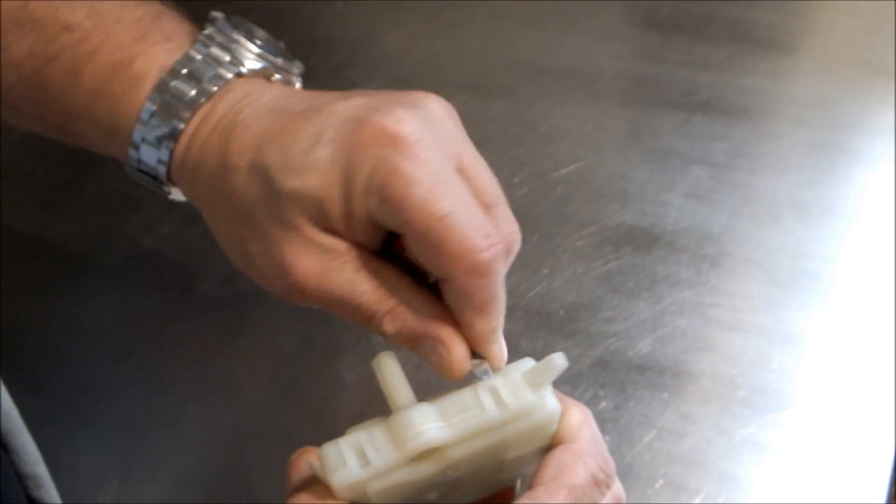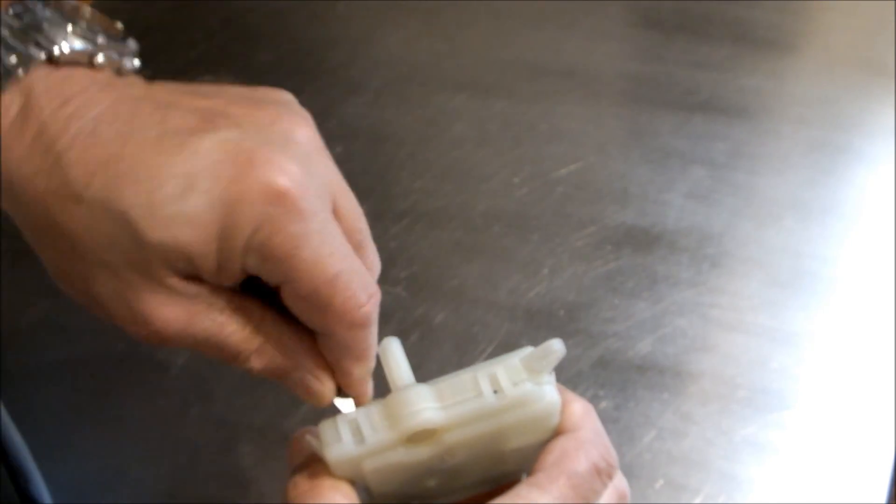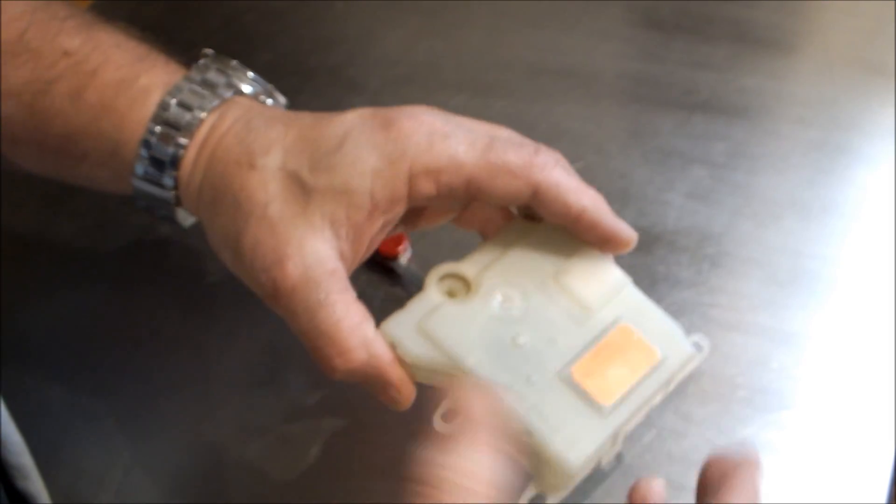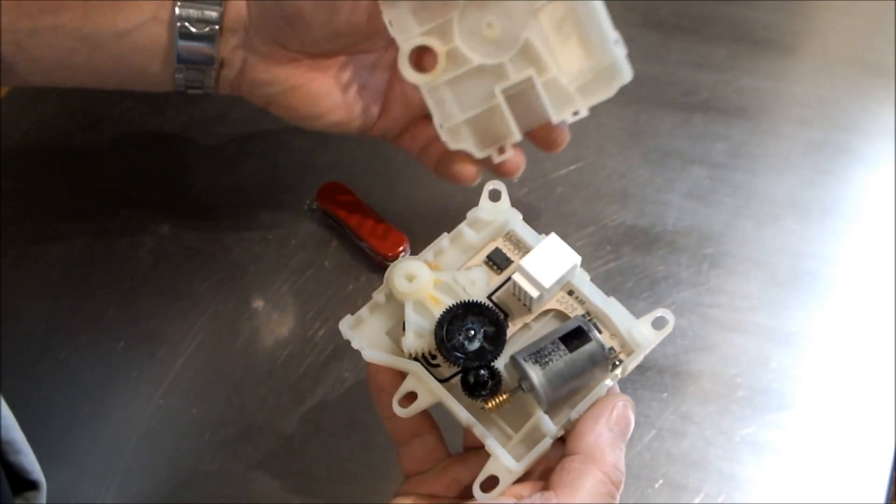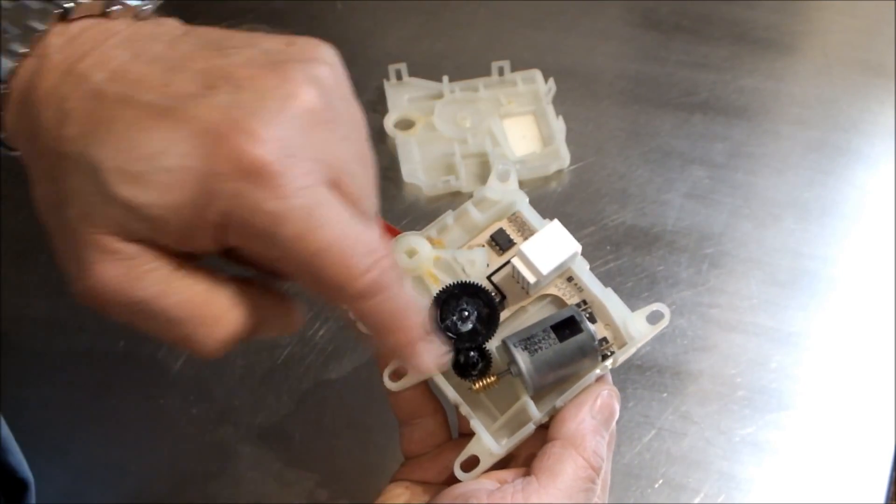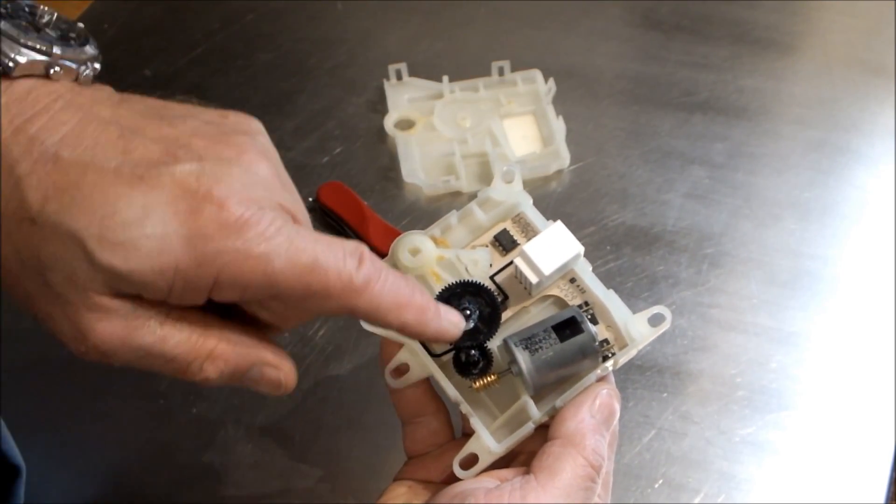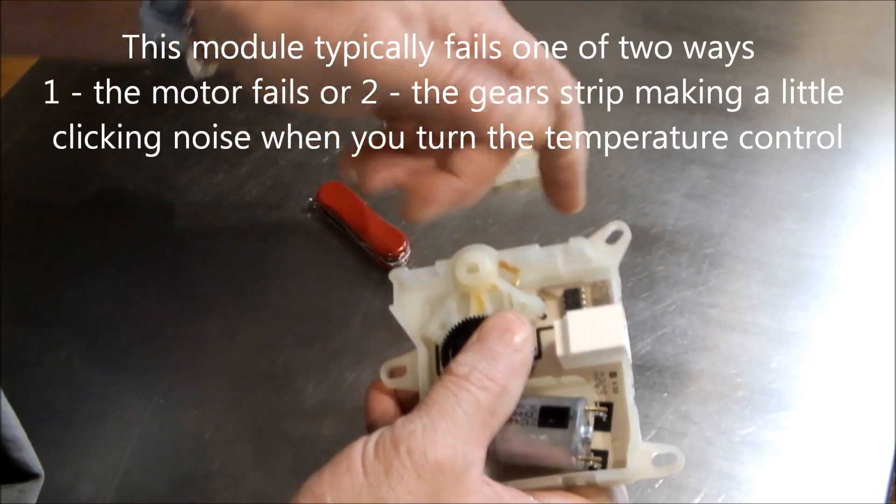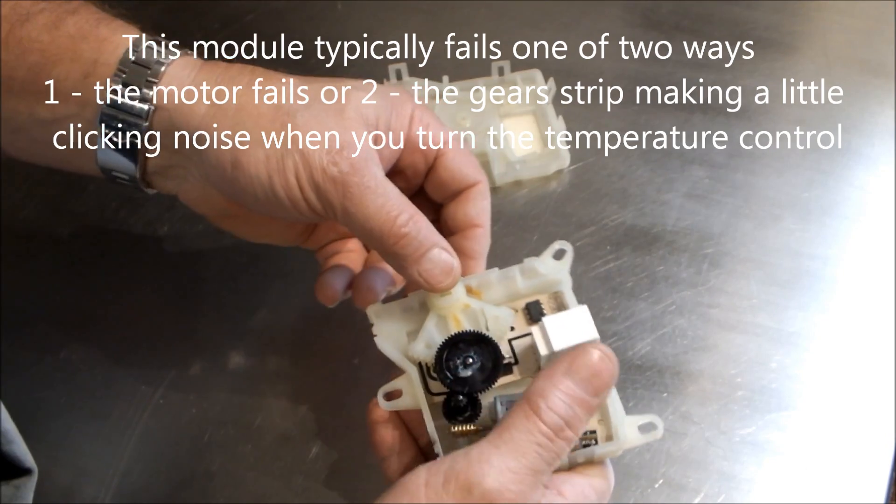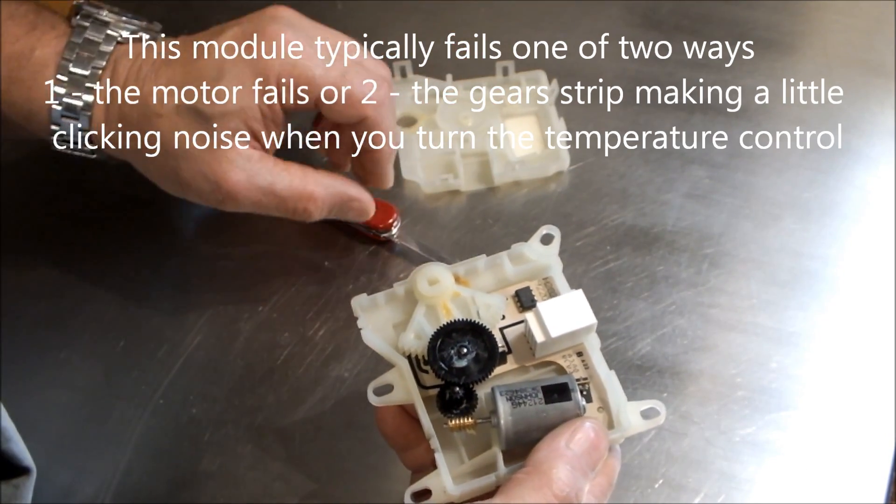There's eight little clips on the side of it, there we go, and we'll take the module apart. And all it is is just a little motor, a little DC motor right there that turns this and turns that, right there.